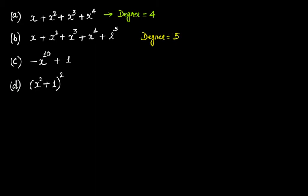But that is wrong. Since this is a polynomial in one variable and the variable is x, you have to find the power of variable x that has the highest exponent. You don't have to consider constants. Here, 2 raised to the power of 5 is a power of 2, not of variable x. The terms made up of the variable x are x, x squared, x cubed, and x raised to the power of 4.